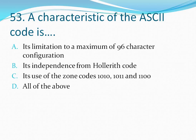Question number 53: A characteristic of the ASCII code is — option A its limitation to a maximum of 96 character configurations, option B its independence from Hollerith code, option C its use of zone codes 1010 1011 and 1100, option D all of the above. The correct answer is option B.